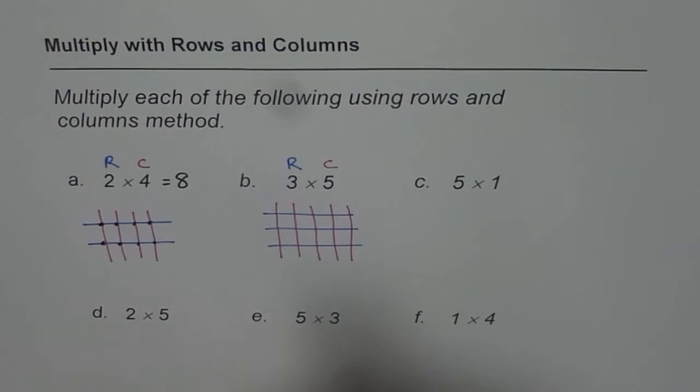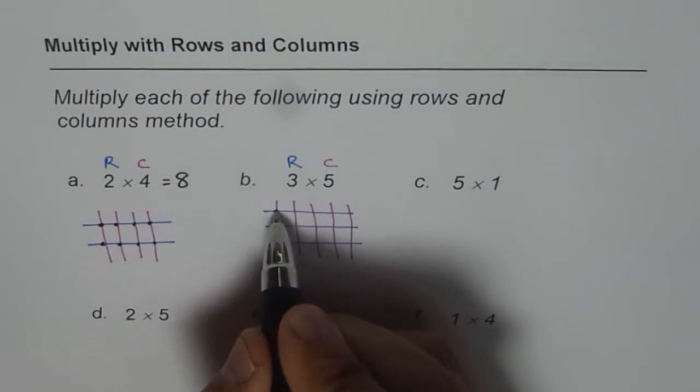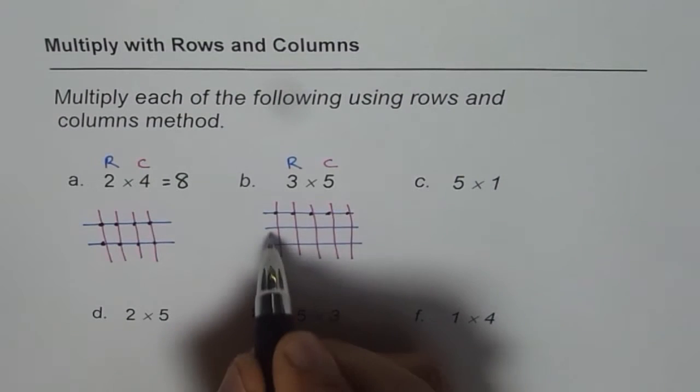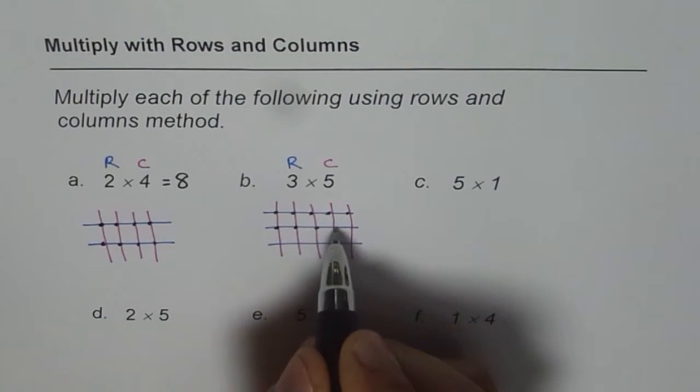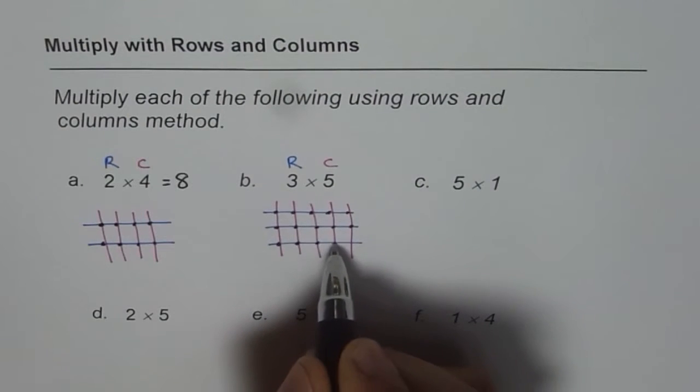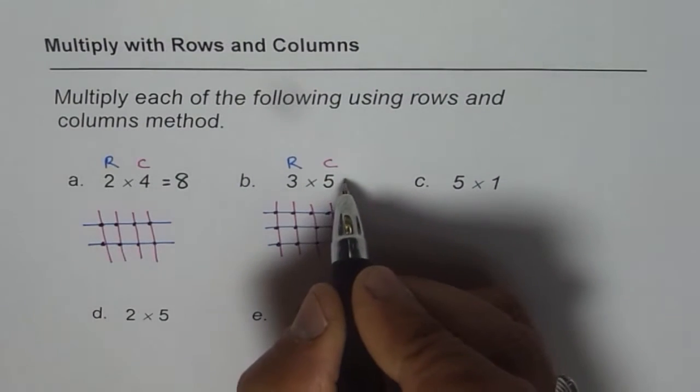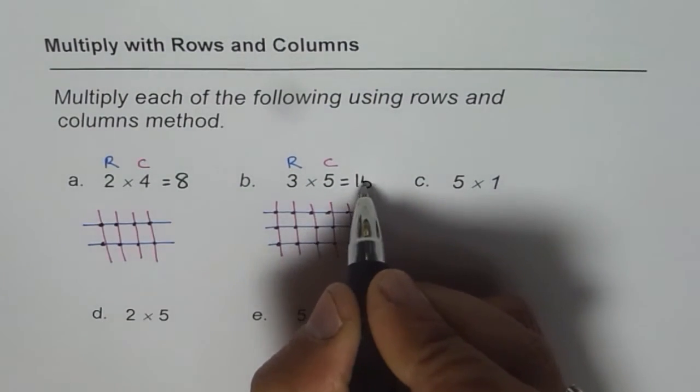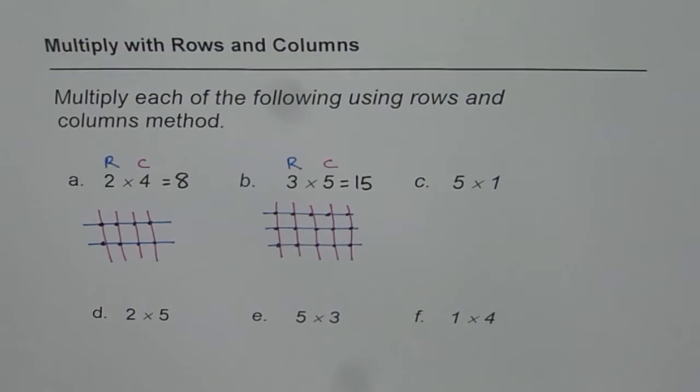Count number of points. 1, 2, 3, 4, 5, 6, 7, 8, 9, 10, 11, 12, 13, 14, 15. So the points are 15. 3 times 5 is 15, correct? So the 2 lines always intersect at a point, correct?